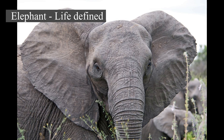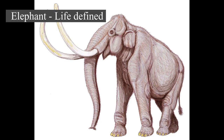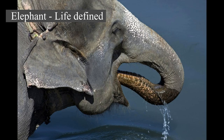Elephants are scattered throughout Sub-Saharan Africa, South Asia, and Southeast Asia, and are found in different habitats including savannas, forests, deserts, and marshes. They are herbivorous, and they stay near water when it is accessible. They are considered to be keystone species due to their impact on their environments.